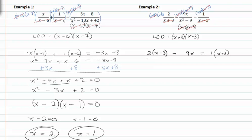This gives me, distributing the two, two x minus six minus nine x equals x plus three. From here I can add like terms and I will get negative seven x minus six equals x plus three.